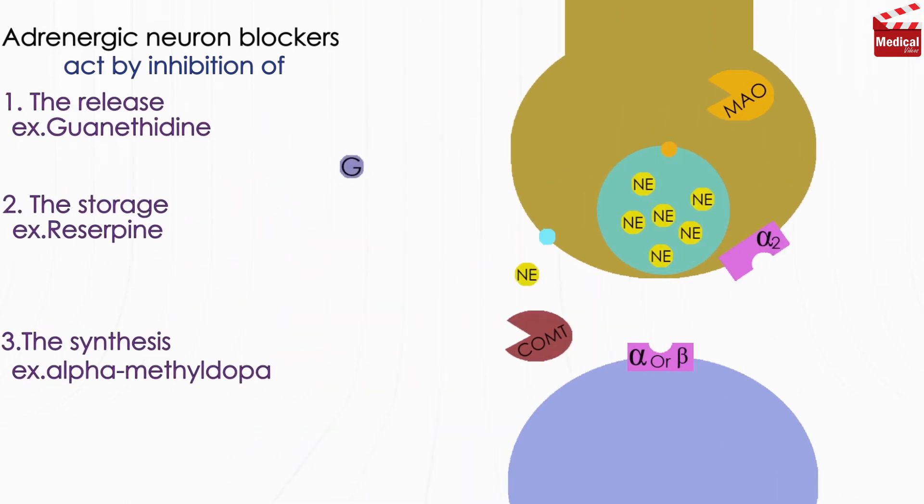Guanethidine is transported across the sympathetic nerve membrane by the same mechanism that transports norepinephrine itself, so in this step it competes with norepinephrine, and it can potentiate exogenously applied norepinephrine. Once guanethidine has entered the nerve, it is concentrated in transmitter vesicles, where it replaces norepinephrine.